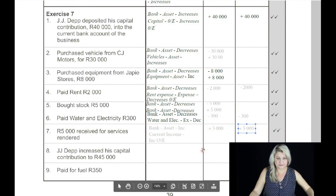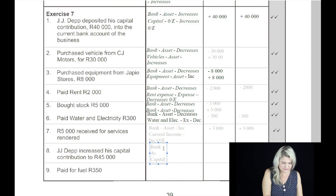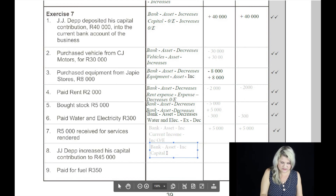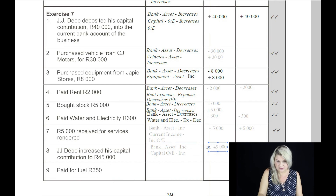On the eighth: JJ Depp increases capital contribution by 45,000 Rand. The two accounts are bank and capital. Bank is an asset — what happens when money comes into the bank? It will increase. And capital is an owner's equity account — what happens to owner's equity? It will also increase because the money is paid in. So bank will increase by 45,000 Rand, and owner's equity will also increase by the same value — 45,000 Rand.